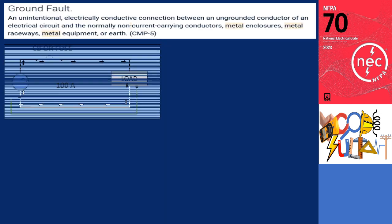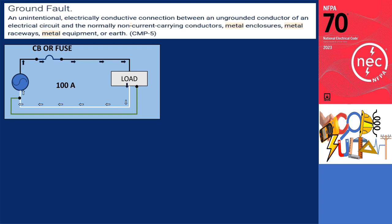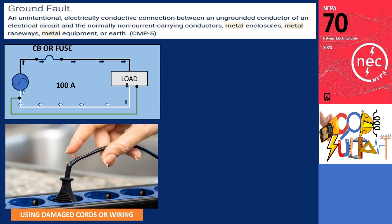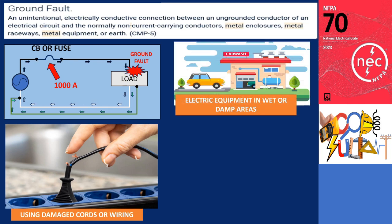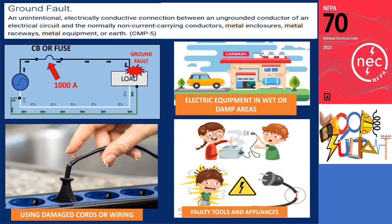A ground fault is an unintentional, electrically conductive connection between an ungrounded conductor of an electrical circuit and the normally non-current carrying conductors, metal enclosures, metal raceways, metal equipment, or Earth. As shown in the illustration, if a circuit with a 100 ampere load is connected, one of the causes of ground fault is damaged insulation in conductors. Once a damaged conductor touches the metal parts of any equipment, a ground fault will occur. Other causes of ground fault include electrical equipment in wet or damp areas and faulty tools and appliances.